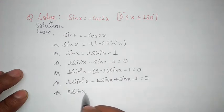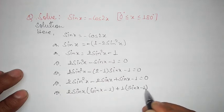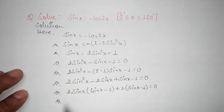2 sin x is common, leaving sin x minus 1, plus 1 is common, leaving sin x minus 1 equals 0. In the first term and second term, sin x minus 1 is common.